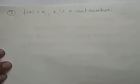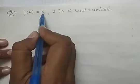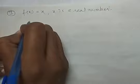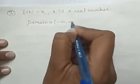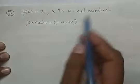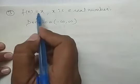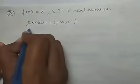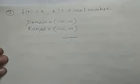Last question: f(x) = x, where x is a real number, aur hame range nikalni hai. Function hi x ke equal hai. x is a real number, toh domain ho jayega (-∞, ∞). Ab x ki jo values hain woh function ke equal hain — matlab range ke equal. Domain aur range dono aapas mein equal hain, isliye range bhi (-∞, ∞) ho jayegi.